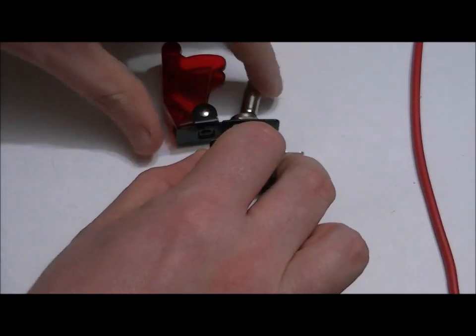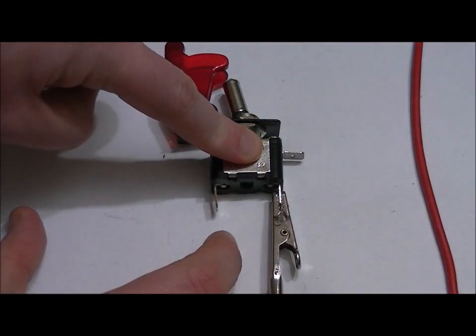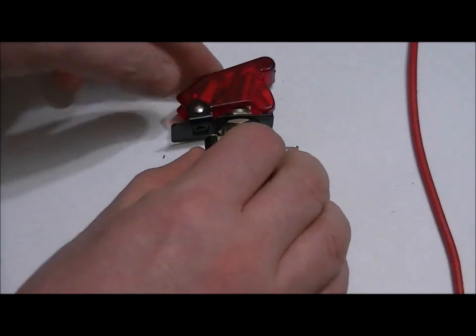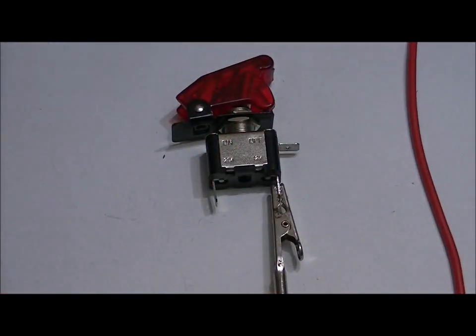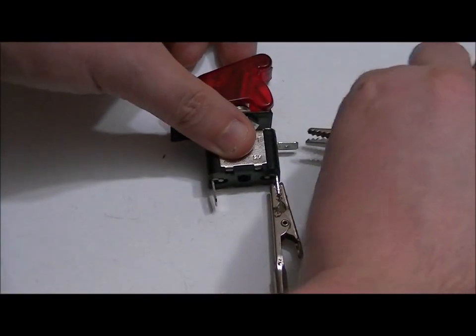When you turn on power, 12 volts travels through the switch and powers your load. Now I'm going to turn it off. But as well, what you can do is you can solder a DC ground connection right here.